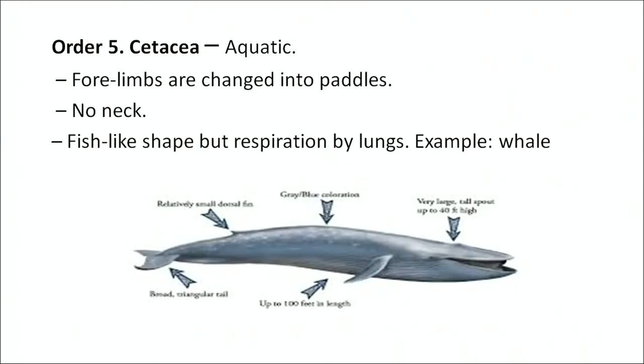The fifth order is Cetacea — these are aquatic animals. Forelimbs are changed into paddles. They have no neck and a fish-like shape but respiration is by lungs. Example: whale.